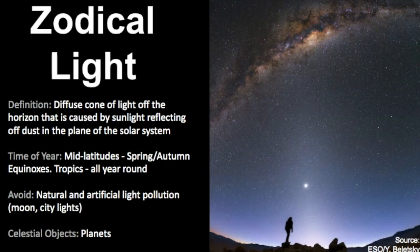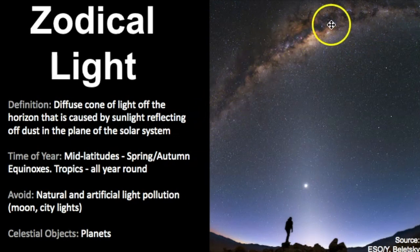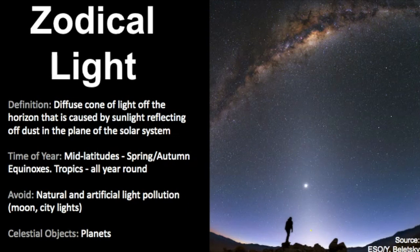Let's review everything we learned about zodiacal light. It is a diffuse cone of light that comes off the horizon from sunlight reflecting off dust in the plane of the solar system. It depends upon your location — in mid latitudes you can see it during the spring and autumn equinoxes, but in the tropics you can see it all year round. The key is avoiding natural and artificial light pollution such as the moon or city lights. Often you can see planets right within this cone of light. I love this picture because it shows the difference between what the Milky Way looks like and what the zodiacal light looks like. I wish you luck seeing this amazing astronomical phenomenon — it's really, really beautiful. Thanks for watching, and keep looking up!